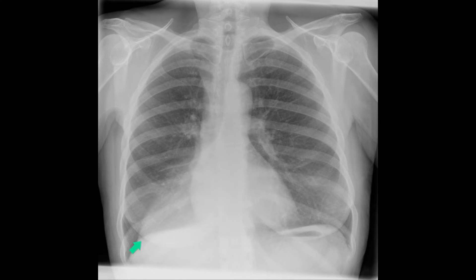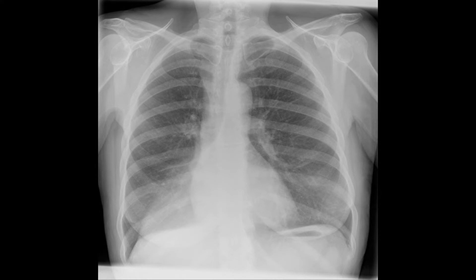The reason why you see the right hemidiaphragm is because there is hyperexpansion of the right middle lobe, which then abuts the diaphragm, enabling it to be seen as the X-ray beam hits the interface between the diaphragm and the right middle lobe tangentially. Note that there is some volume loss in this patient, and the right hilum is not seen very well because it is displaced downwards due to the collapse.